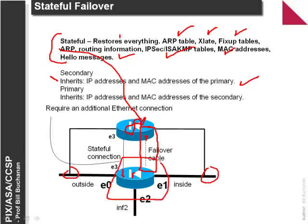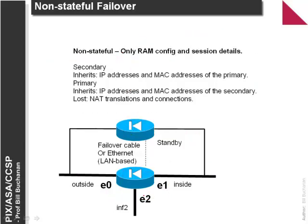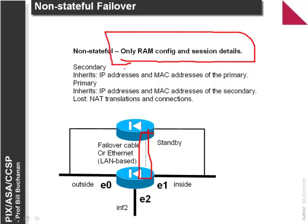The primary will inherit all the IP addresses and MAC addresses of the secondary. In non-stateful failover, we basically just have a network connection between devices and it will only keep RAM configurations and session details. Unfortunately it will lose all NAT translations and connections.